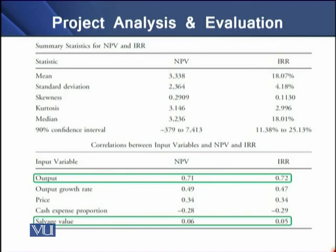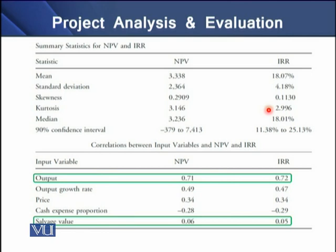The summary statistics for NPV and IRR show that the mean values are relatively close to the actual values. The standard deviation and skewness of both values indicate that the probability distributions are positively skewed slightly to the right. The kurtosis values for NPV and IRR are close to 3, confirming that the distributions are neither peaked nor flat.